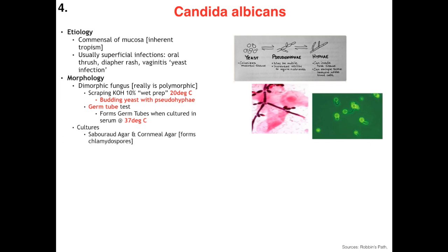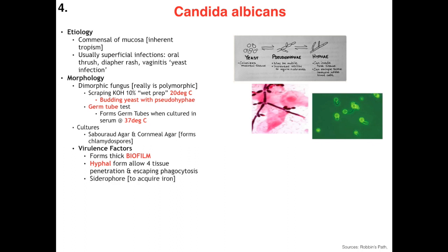For cultures, Sabouraud's agar can be used for any fungi, and some texts also reference cornmeal agar. For virulence factors she has many: she forms a thick biofilm, creating risk of contamination for things like indwelling catheters and prostheses, making her a nosocomial disease. Hypha formation allows for tissue penetration and escaping phagocytosis. She is a siderophore, meaning she has the machinery capable of acquiring iron from the host. She is also catalase positive — patients with chronic granulomatous disease are more at risk.